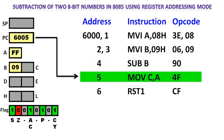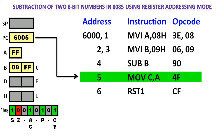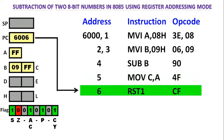Next is MOV C, A. The accumulator contents will be transferred to the C register — we are saving the result into the C register. Finally, RST1 is the software interrupt — that is the restart of the 8085. This is how our program will be executed.